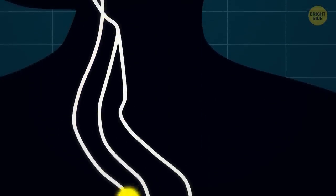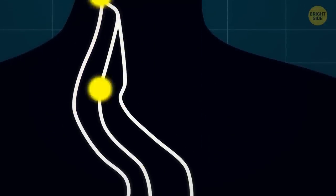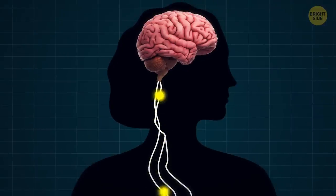Similarly, getting scared, for example, activates the vagus nerve, which has a calming effect, thereby interrupting the other part of the reflex.